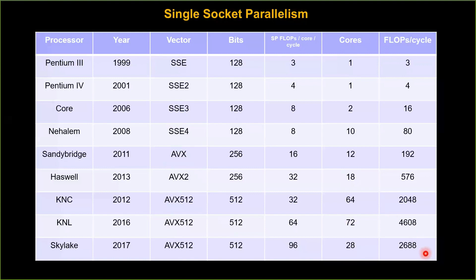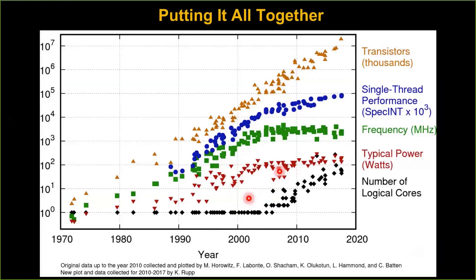So putting it all together: transistors have kept coming — this is Moore's Law hasn't abandoned us. Single-thread performance has really plateaued, so being a serial programmer is a dead end. Clock rates haven't gone up — computers nowadays run at a couple gigahertz, the same speed they were running 10 years ago. Processors' serial performance is the same because things will melt if they keep cranking more power through them. Instead, what has happened is the number of cores in processors has climbed. This is where your MPI programming is going to turn you into somebody who can take advantage of it.